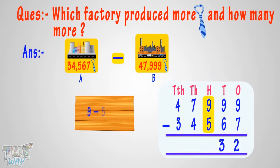9 minus 5 equals 4. Write 4 in difference at 100's place. 7 minus 4 equals 3. Write 3 in difference at 1000's place.